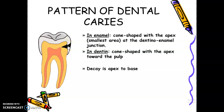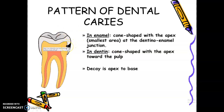In the dentine, it's still the same whether pit and fissure caries or smooth surface caries. So if I ask you in a quiz, what is the relationship of decay in smooth surface caries? The answer will be apex to base — apex of the triangle in the enamel to base of the triangle in the dentine. The description will always start from the enamel to the dentine.